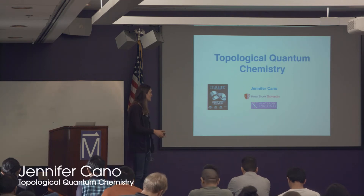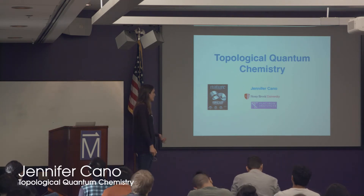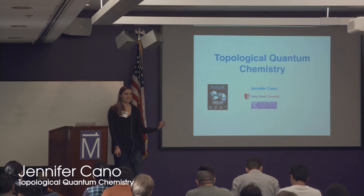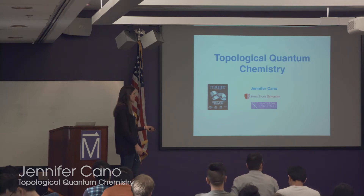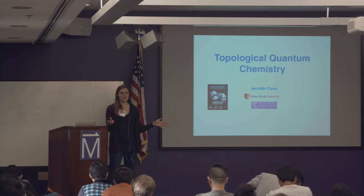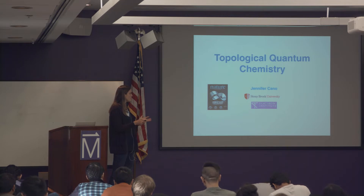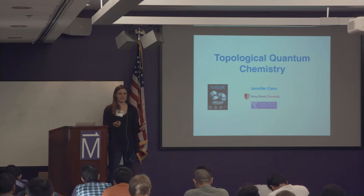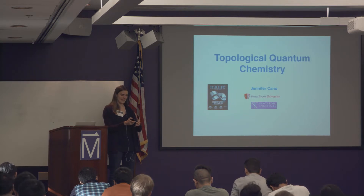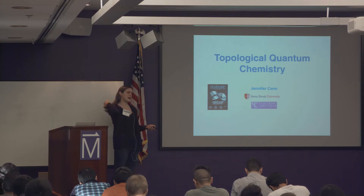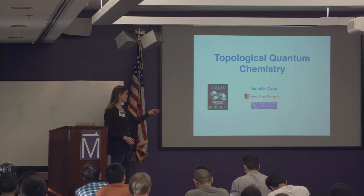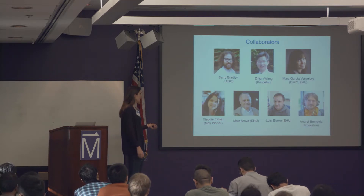In the last hour I tried to give an overview of how we could understand topological invariants in different dimensions — developments that have evolved over the past 10 years. The aim for the next hour is to move into current research, and in particular what I've been working on in the past couple of years. The subject is our paper called Topological Quantum Chemistry.